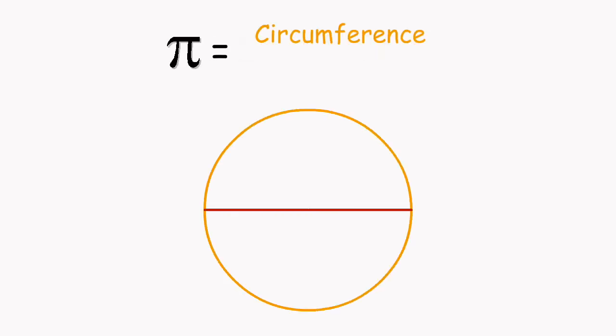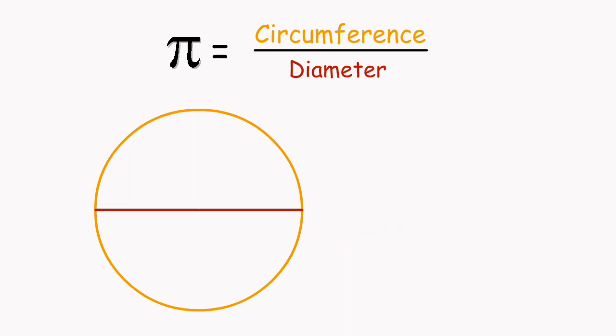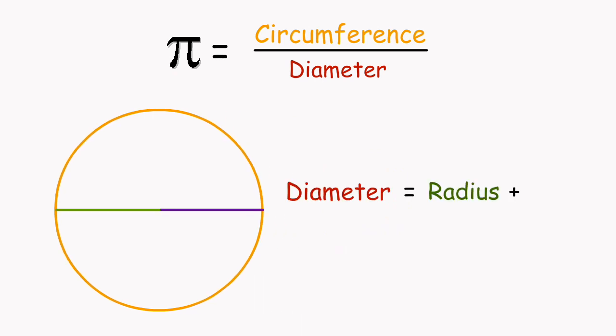What is pi? Pi is the ratio of a circle's circumference over its diameter. Another way of writing this is that pi equals the circumference over 2r. But how do we know that the ratio is always true for any circle? Let's go ahead and prove it.